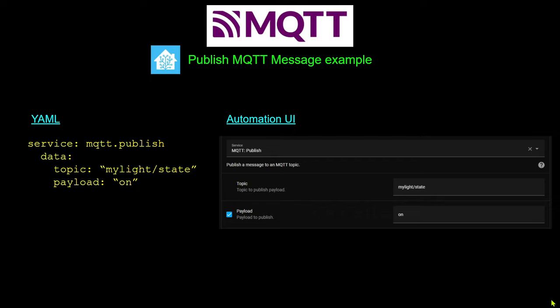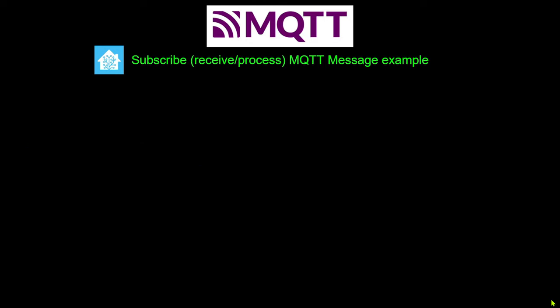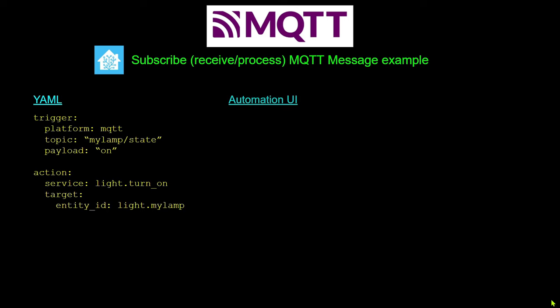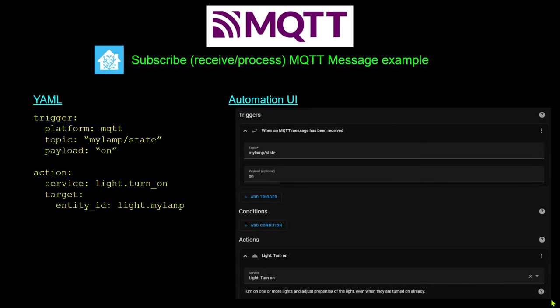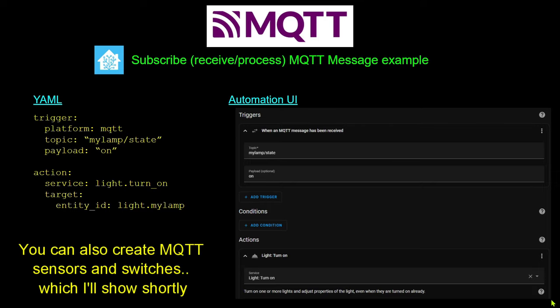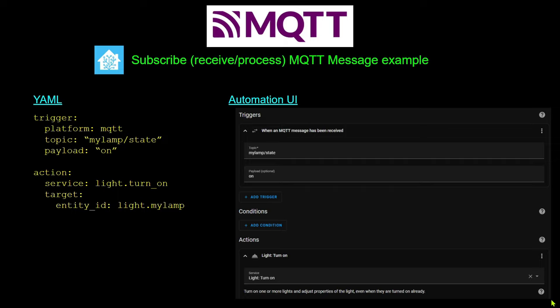If we want Home Assistant to subscribe to or receive messages from external devices, that's pretty simple as well. We use an automation trigger: Home Assistant waits until it receives a message from the MQTT broker with a topic of 'mylamp/state' and a payload of 'on'. When that happens, the automation takes action — in this case, turning on a light called MyLamp. So we can both publish and subscribe to messages through Home Assistant to interact with devices that don't have native integrations.